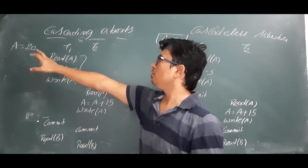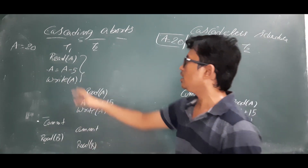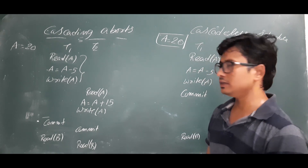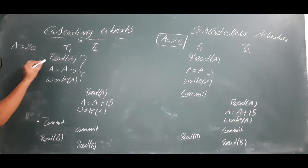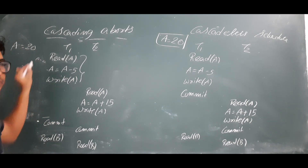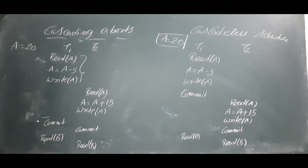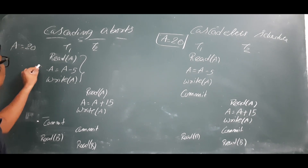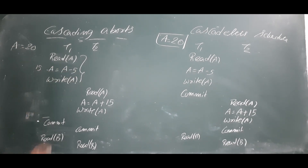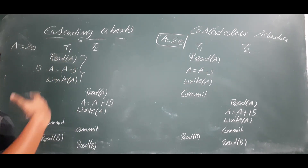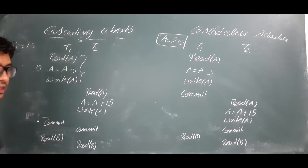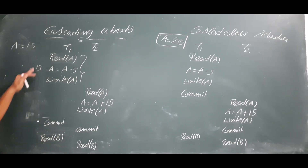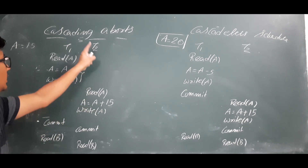To understand the cascading abort problem, I have taken a small example where initially A's value is 20. Transaction one reads A from the database into cache memory, so it has read A as 20. Then A = A - 5, subtracting 5 from A, so now A becomes 15. Then write A — you are temporarily storing the data in memory. So the value was 20, now it becomes 15.